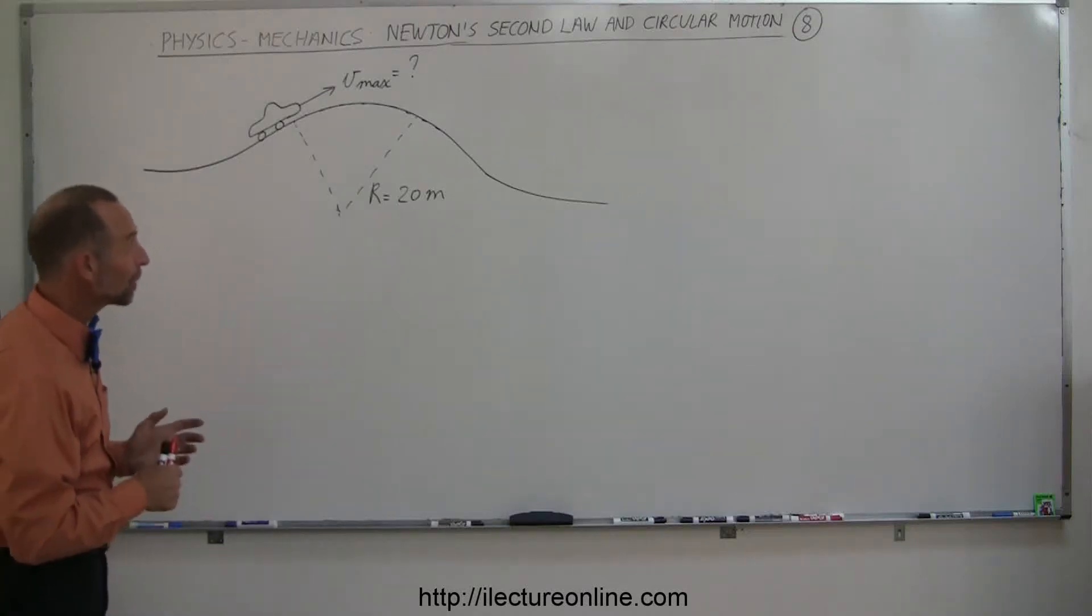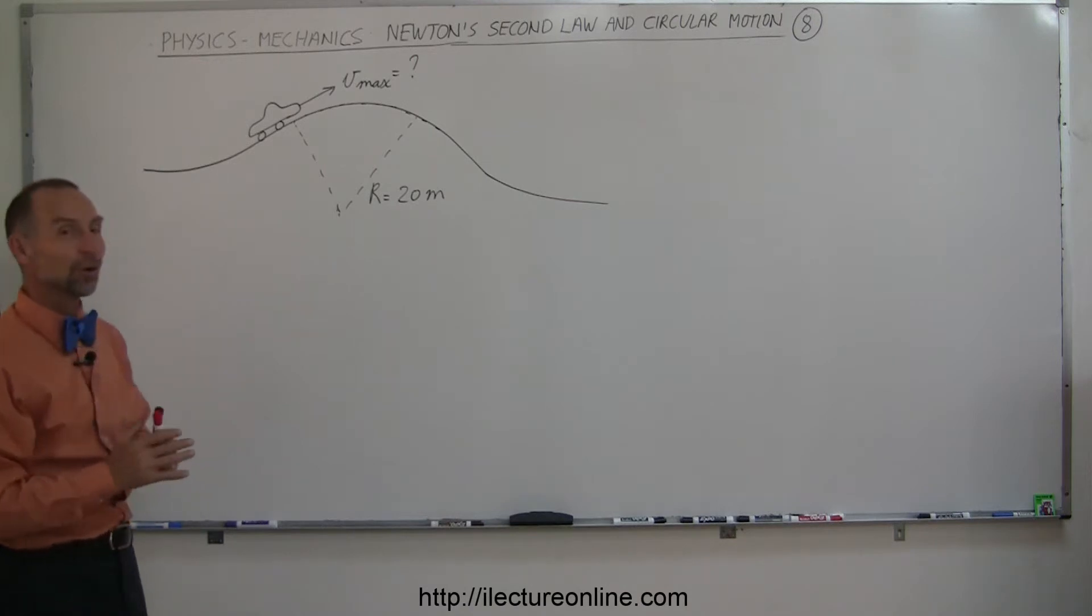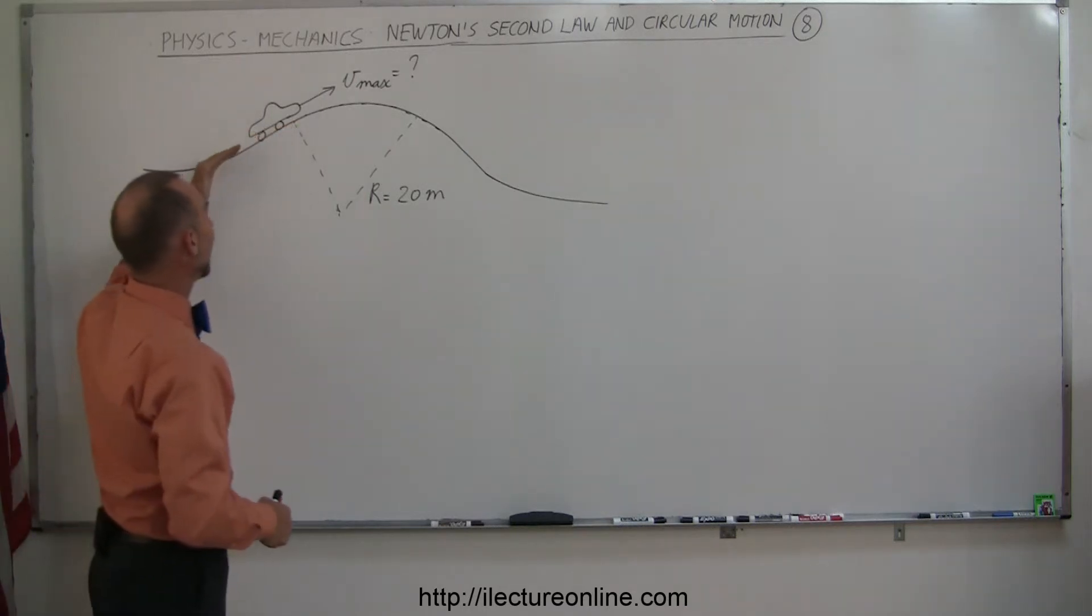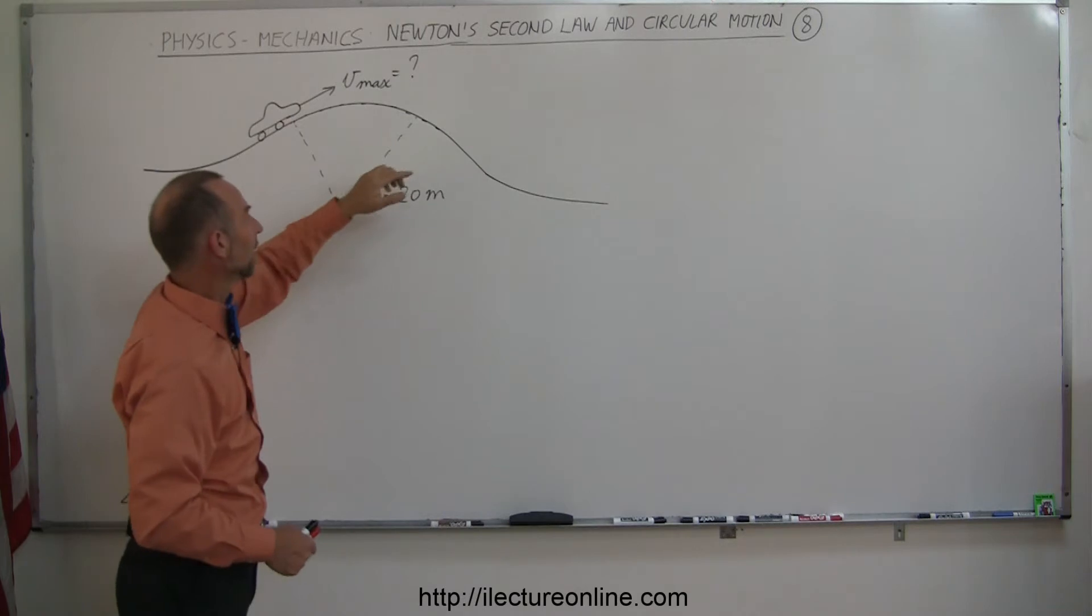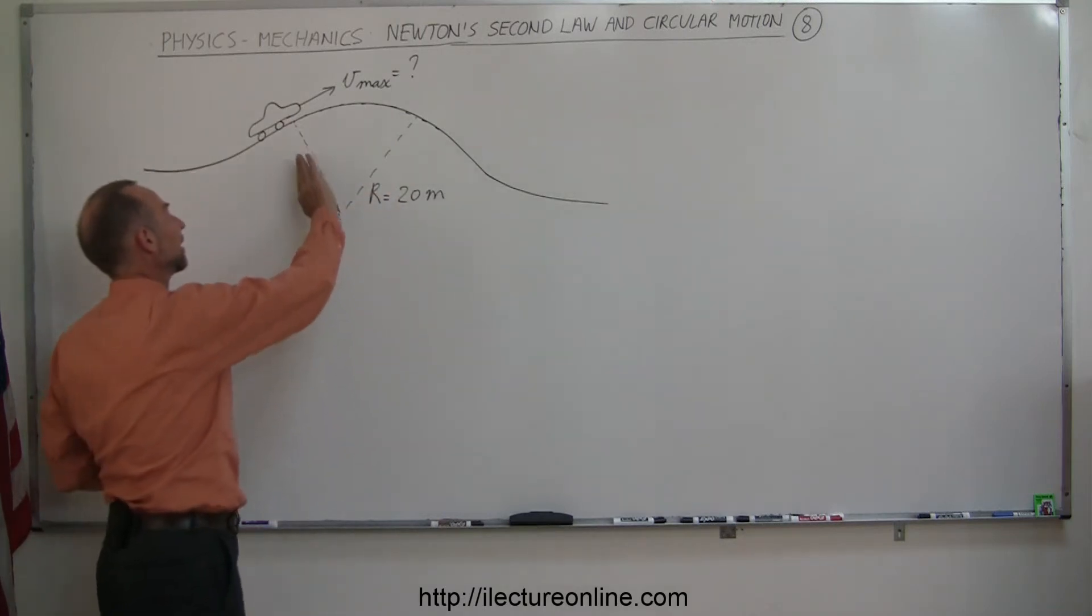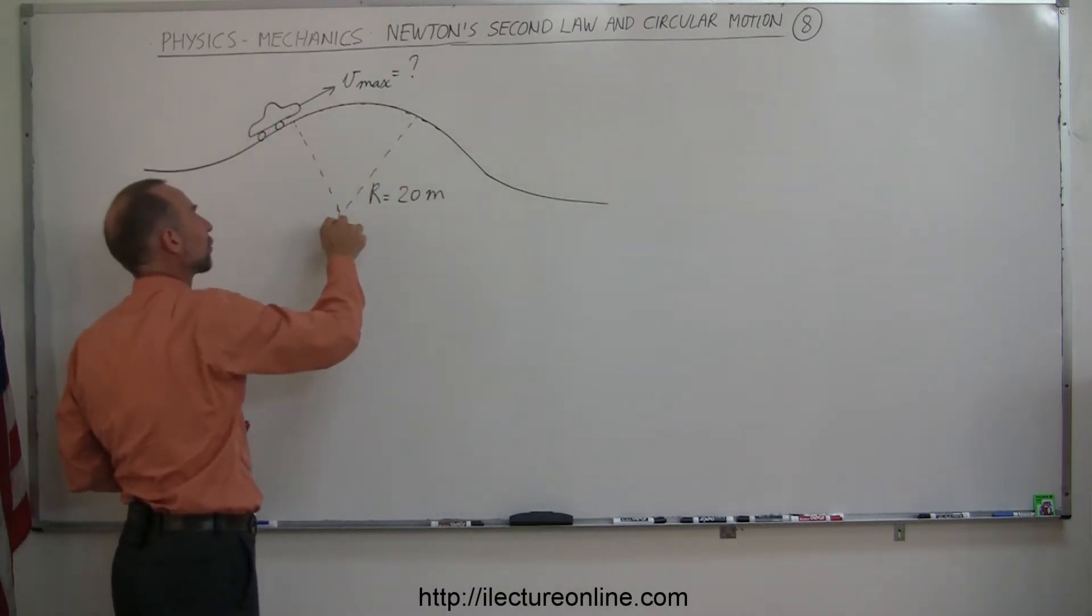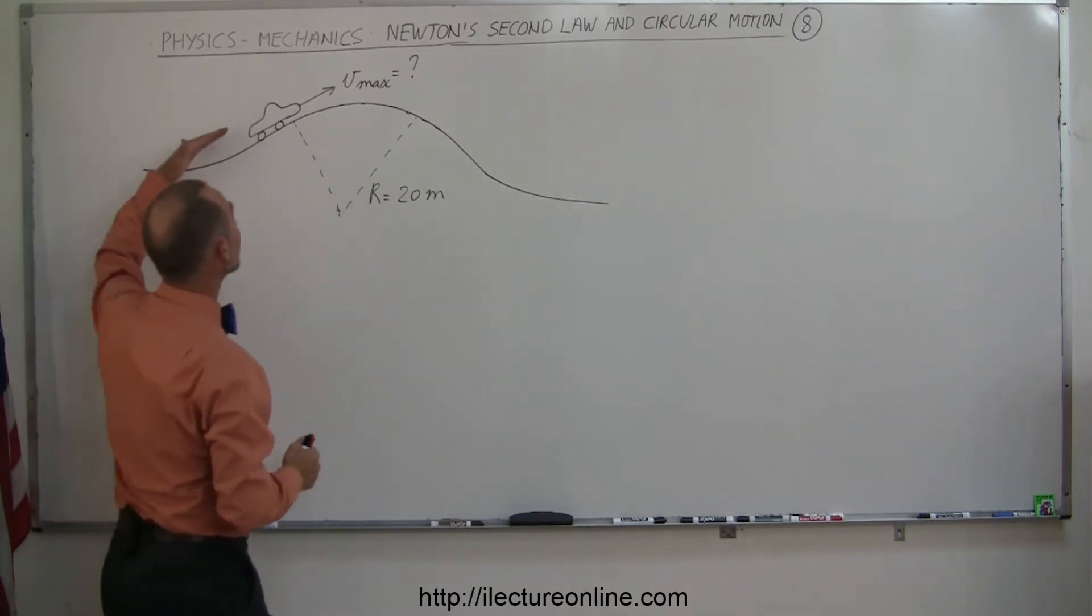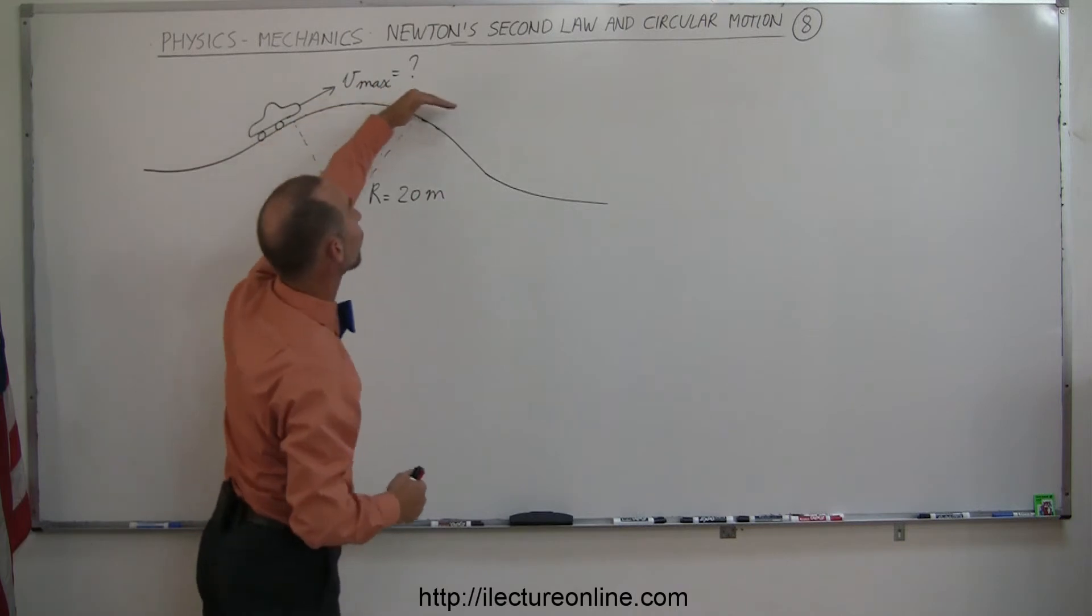This next example is perfect for those people who like to go to the desert and ride their dune buggies over the hills and on these very winding and hilly roads. Let's say that we have this little dune buggy coming up to this big hill and the hill curves this way. We can simulate it by saying that this hill makes a radius of curvature of 20 meters. How fast can this little dune buggy drive over this hill without going airborne?